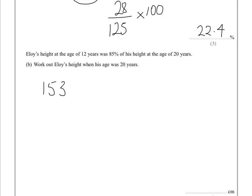So 153 is the equivalent to 85%, because it's 85% of his height at 20. So what we need to know is what was this part of the equation when this side says 100%, because that's his height when he's 20.